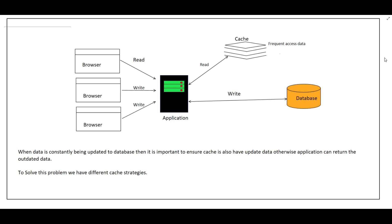Welcome to my channel. Today we'll talk about different types of caching strategies. Before understanding caching strategies, let's first understand why we need them. Suppose we have multiple clients coming from browsers — browser 1, browser 2, browser 3 — and we have an application. Here we have a caching server which keeps frequently accessed data in RAM, and here we have a database. Whenever read requests come, we read from the cache.